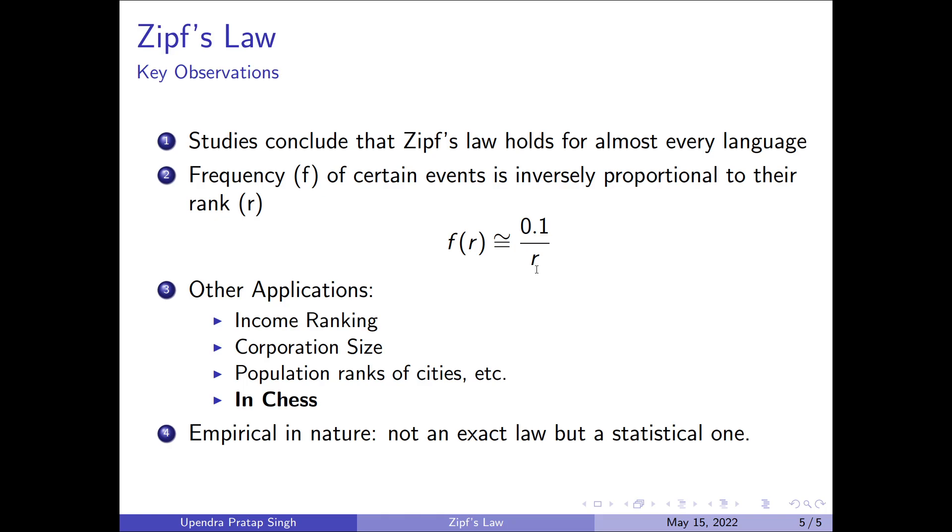When we talk about income, what is going to happen is a large number of people are going to have a smaller income and higher ranking people or people with a higher rank will have more income. So in this way what we can find is the lower ranking people are more in number and higher ranking people are less in number.